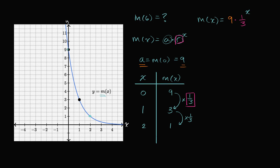So we can write down that m of six is going to be nine times one over three to the sixth power. That is going to be equal to, that's the same thing as nine times, well, one to the sixth is just one. And so it's going to be one to the sixth, which is just one over three to the sixth power.